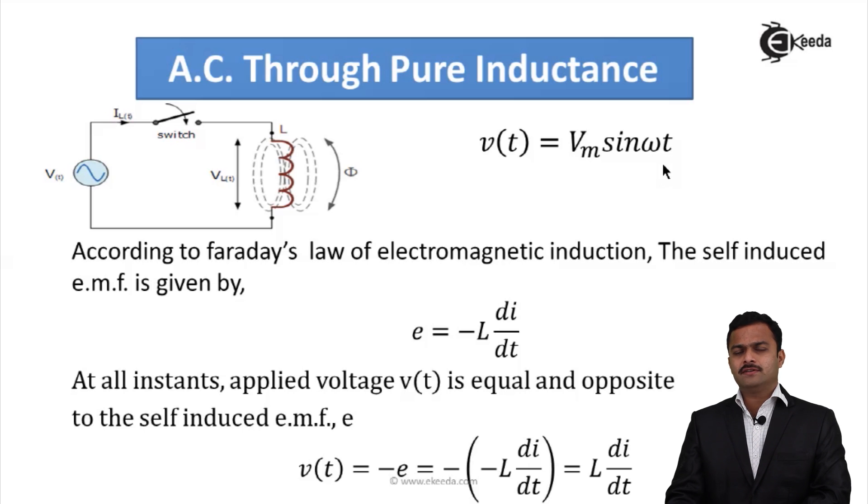Now this voltage will give rise to a flux φ and this change in flux φ with respect to time linked with the inductor. We have Faraday's law of electromagnetic induction which tells EMF induced is minus dφ/dt and φ is given by L into I. So ultimately I will get an equation, EMF induced which is a self EMF equal to e = -L di/dt.